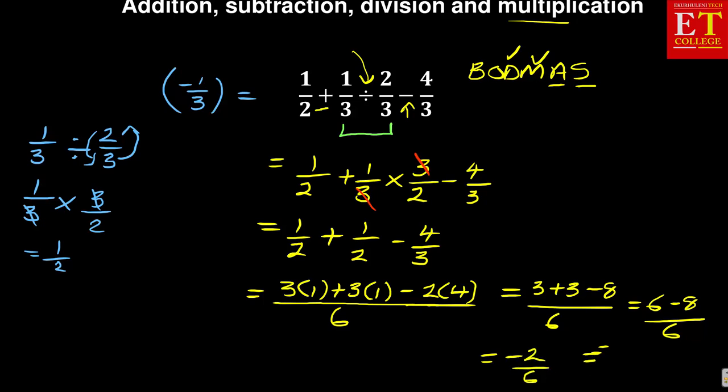This is equal to 6 minus 8 is minus 2 over 6, which is equal to, if you divide 2 into 2 is 1, 2 into 6 is 3, which equals minus 1 over 3. Now if you still remember, this is the same answer that we got with our calculator, so it means the BODMAS was used correctly.